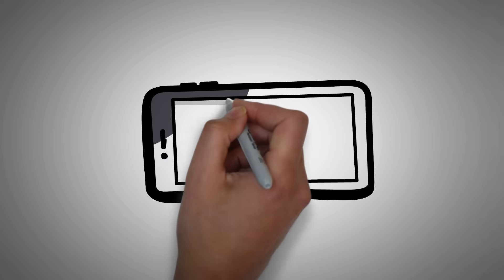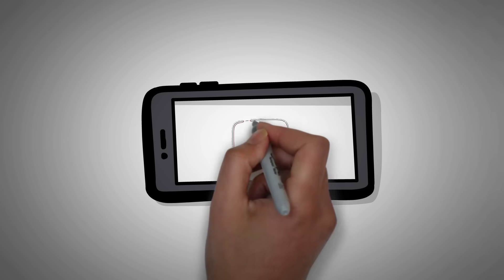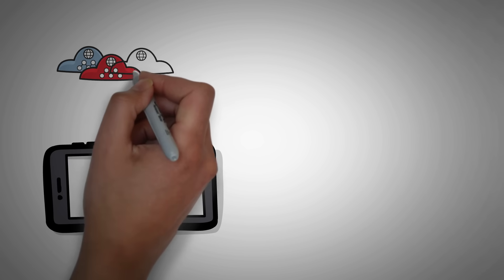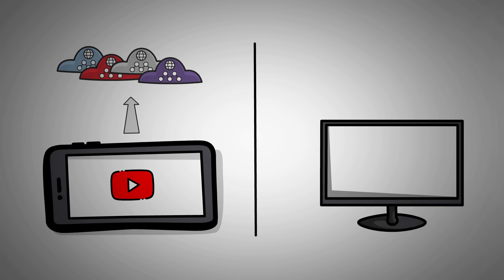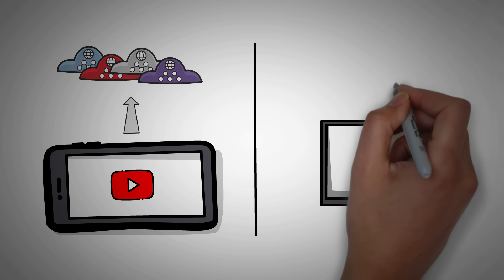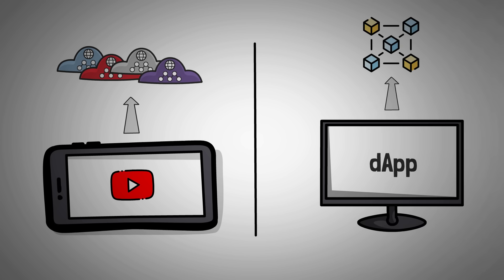You know how your phone can have a bunch of different applications? There's Facebook and Instagram and Gmail and YouTube. They're basically all applications that run code created by the company so that you could interact with their company. Well, a dApp, or a decentralized application, is very similar in how it works — except instead of reporting back to Facebook servers or TikTok servers, this app reports back to the blockchain.